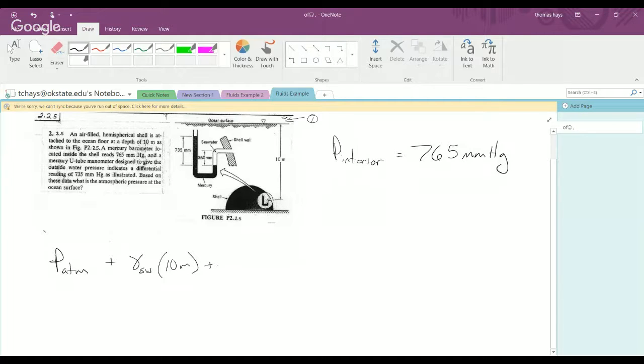And then plus, we will have another depth of seawater. So gamma seawater, that's the fluid we're dealing with, times 0.360 meters. And that is the additional drop in height from the opening of that manometer tube down to the mercury liquid level height.